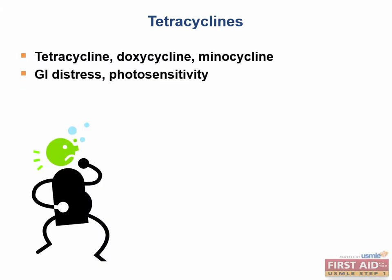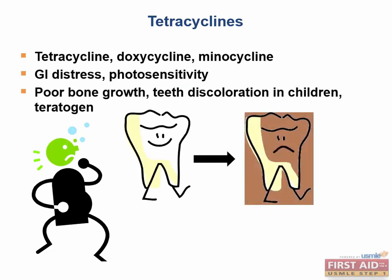Common side effects of tetracyclines are GI distress and photosensitivity. More importantly, tetracyclines are contraindicated in pregnancy because they can lead to congenital defects in addition to poor bone growth in the fetus. They are also contraindicated in young children because they can cause teeth discoloration.